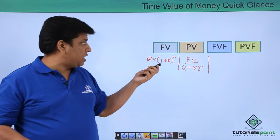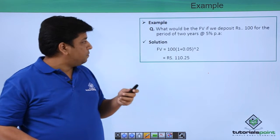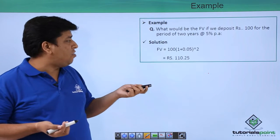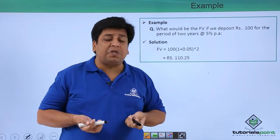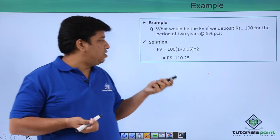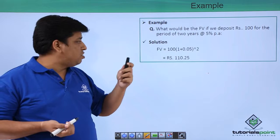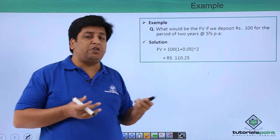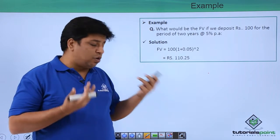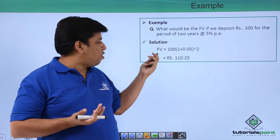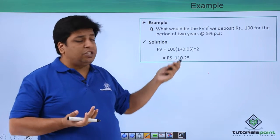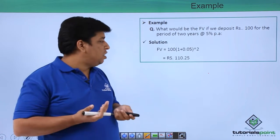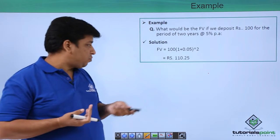Here is an example of time value of money. What would be the future value if we deposit rupees 100 for a period of two years at five percent per annum? Your interest rate is five percent, duration is two years, and the present value is rupees 100. Using the formula: Future Value = Present Value × Future Value Factor = 100 × (1 + 0.05)^2.